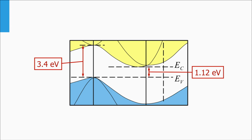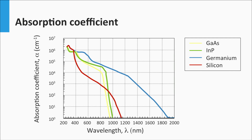For an indirect band gap material, it is less likely that a photon above the band gap is able to excite the electron into the conduction band compared to a direct band gap material. Consequently, the absorption coefficient of crystalline silicon is significantly lower than direct band gap materials like gallium arsenide and indium phosphide, as we can see in this plot. Crystalline silicon is indicated by the red line, whereas gallium arsenide and indium phosphide are indicated in yellow and green. In the visible spectrum, crystalline silicon absorbs less, but below 364 nm it absorbs just as much as gallium arsenide and indium phosphide, because silicon has a direct band-to-band transition there as well.